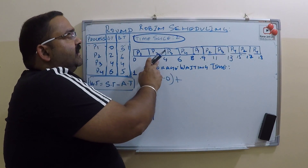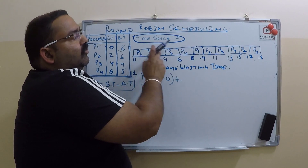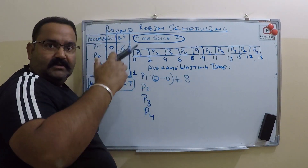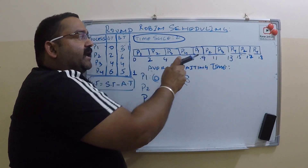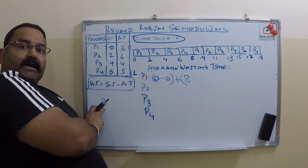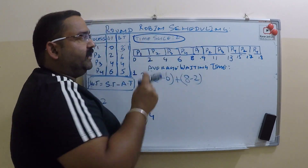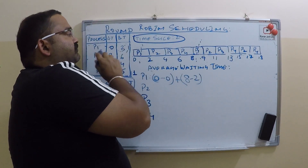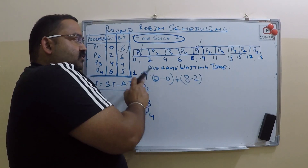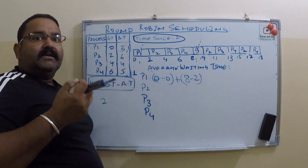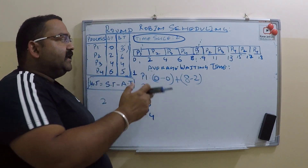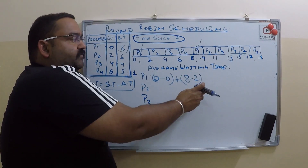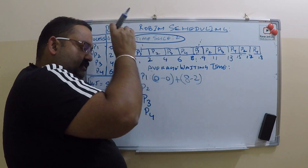When P1 again got CPU attention, it was at time 8 — that is the start time for the next slice. At what time did it arrive in the wait queue? It arrived at time 2. So 8 minus 2 gives the waiting for that slice. P1 completes its execution in this second time slice. So the total: initially it came into the wait queue at time 0, second time at time 2, because it still had pending processing.